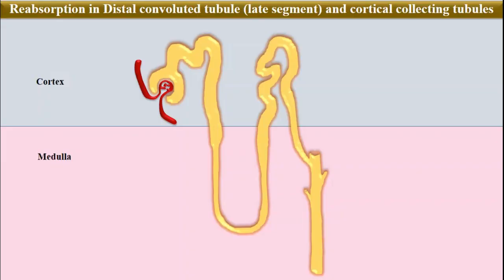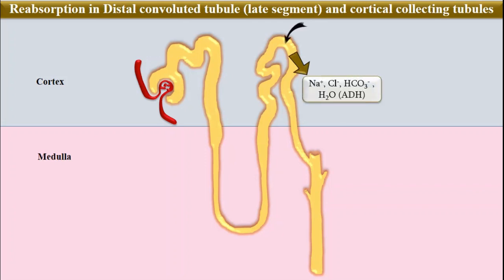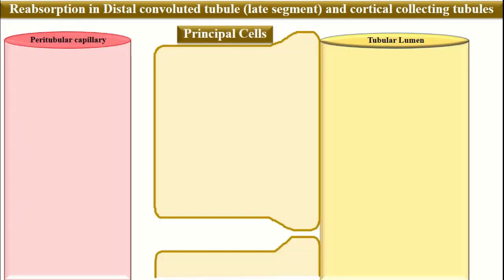Let's discuss reabsorption in the later segments of the distal convoluted tubule and the cortical collecting tubule. The collecting tubules are placed in both the cortex and the medulla, and reabsorption in the cortical parts is almost the same as in the later segments of the distal convoluted tubule, so we will discuss them together. This part is important in the reabsorption of sodium chloride, bicarbonate, and water in the presence of antidiuretic hormone, and the secretion of hydrogen and potassium. Two important cell types are present: principal cells and intercalated cells.